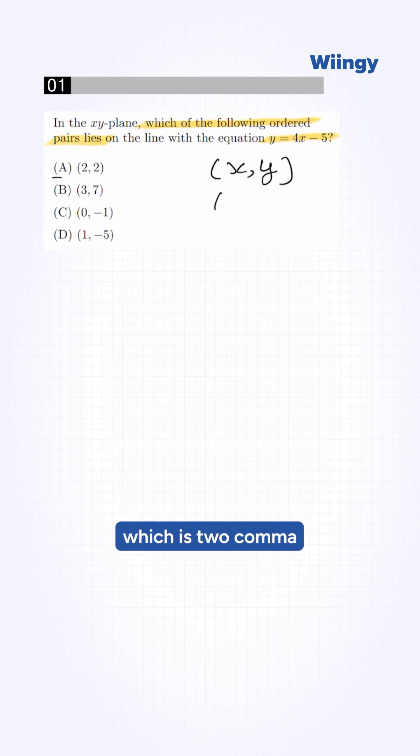So we plug in option A, which is (2, 2), into our equation. This will be 2 = 4(2) - 5. It will be 2 = 8 - 5, which is 3. Left-hand side is not equal to right-hand side, so this is not our correct answer. So we eliminate A.